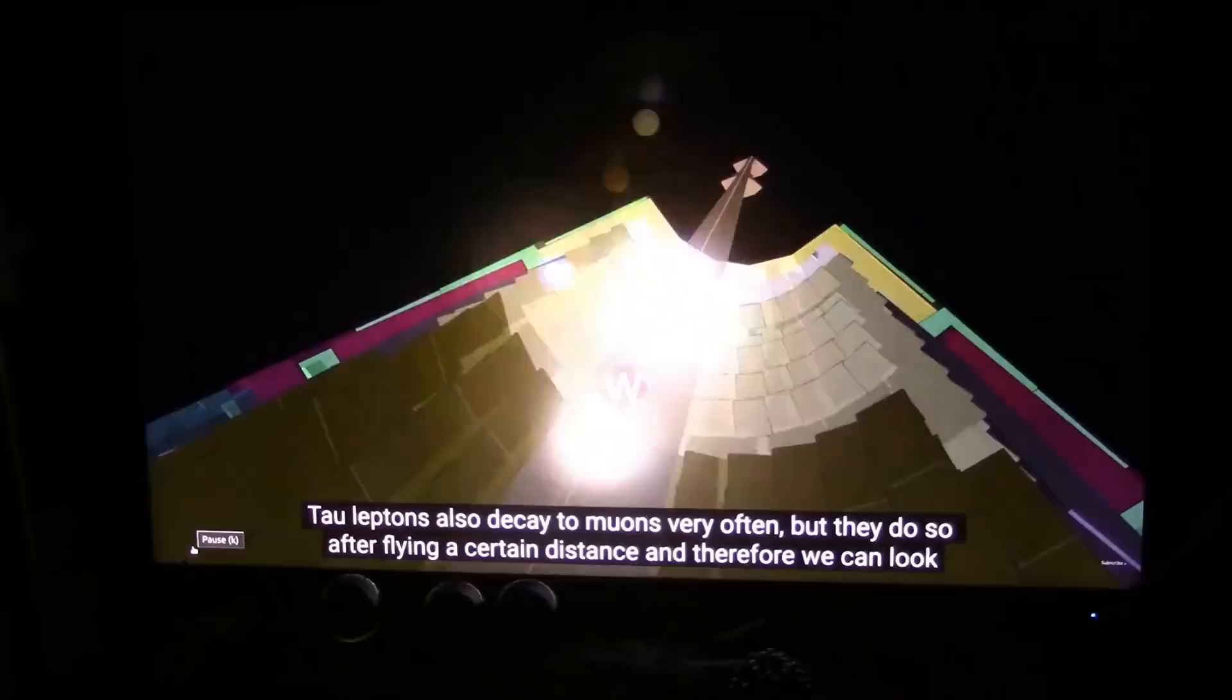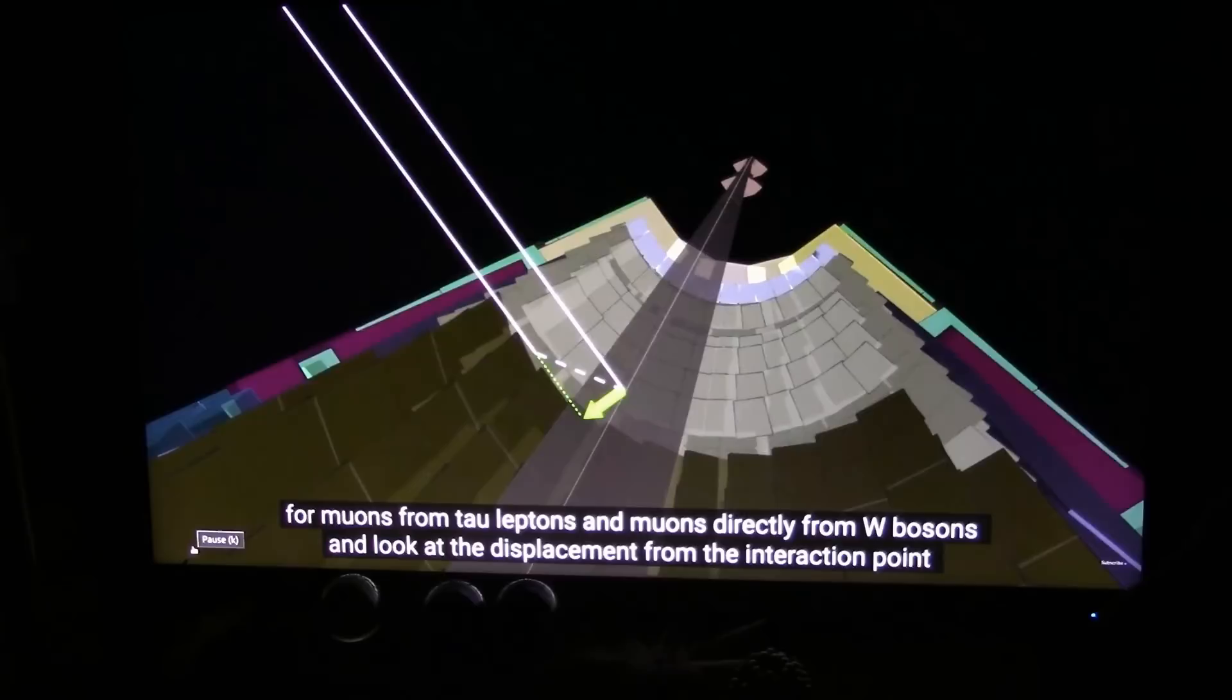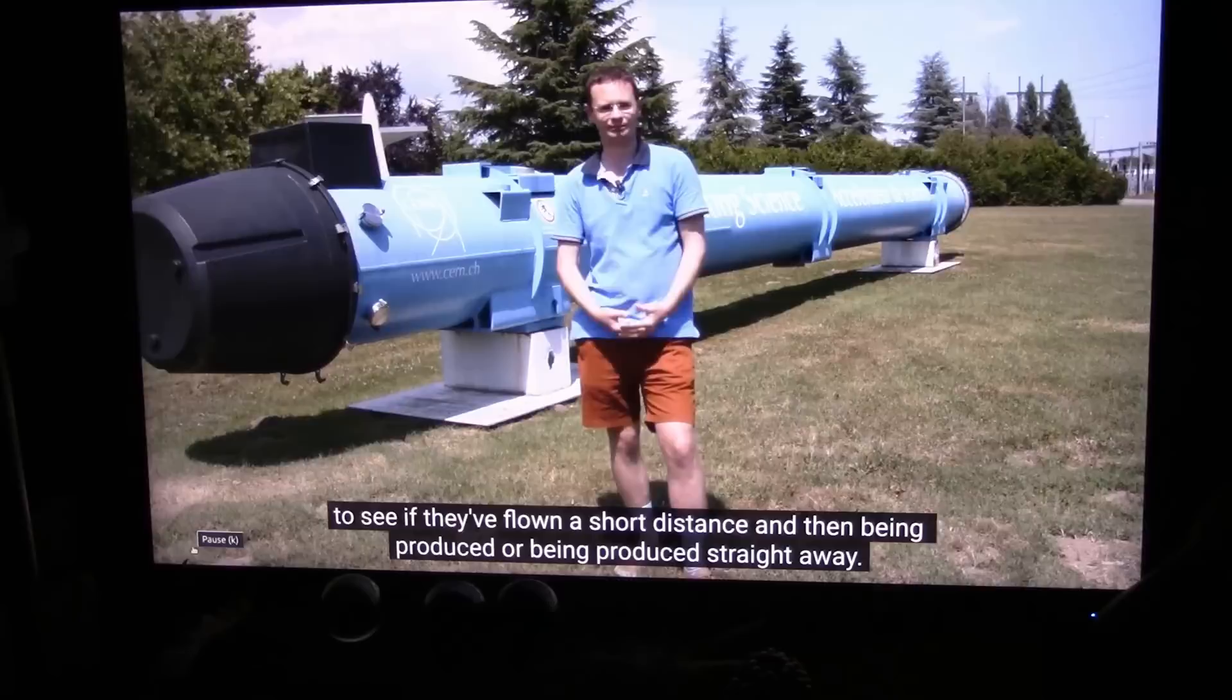By the way, Roger let this whole thing play, but both for time and copyright reasons, I'm not doing that. Instead I'm cutting out bits where they say things like why this is important or the differences between different colliders. Taus, all tau leptons also decay to muons very often, but they do so after flying a certain distance and therefore we can look for muons from tau leptons and muons directly from W bosons and look at the displacement from the interaction point to see if they've flown a short distance and then been produced or been produced straight away. Wow, they're even checking for confounding variables.